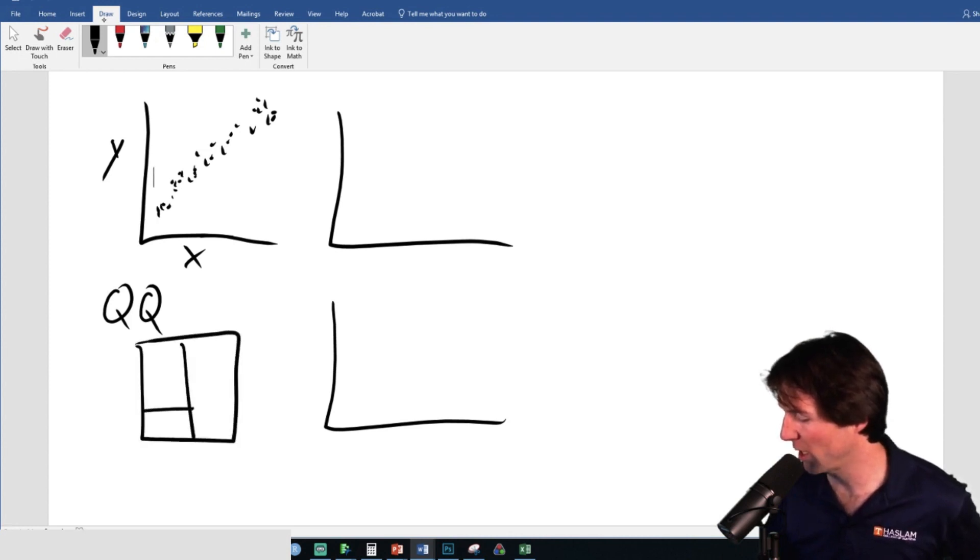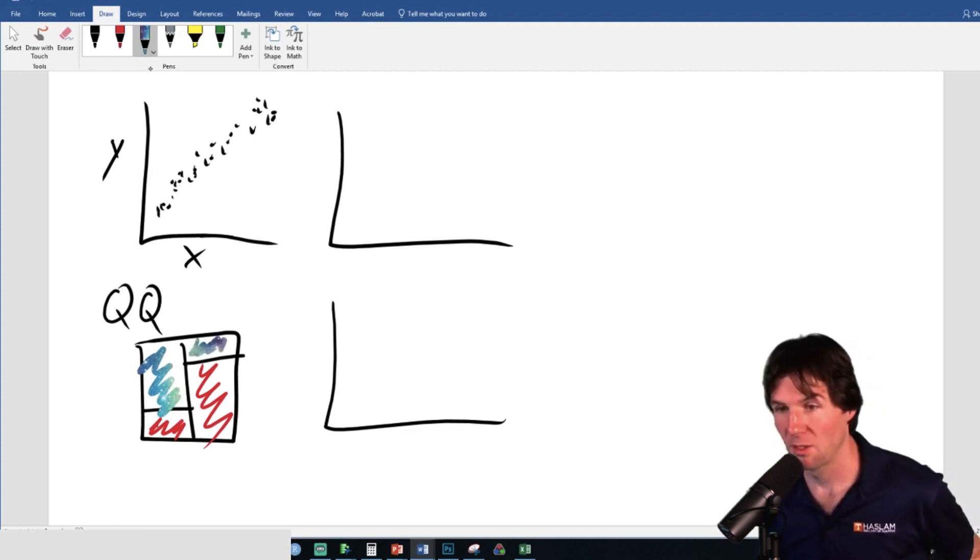Someone earlier was asking about a mosaic plot. This is the counterexample of when it fails. A mosaic plot is not quantitative quantitative. So a mosaic plot is not QQ.